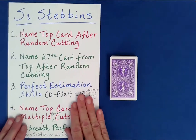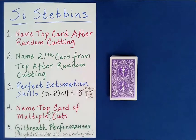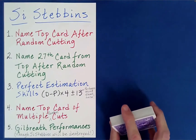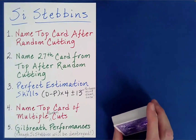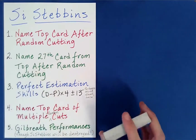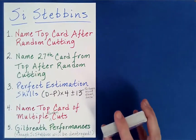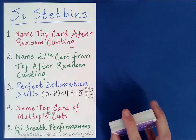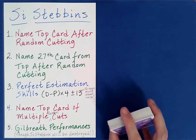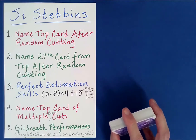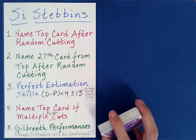Now the last one is a big one and I'll probably eventually put together a whole series on the Gilbreth principle because there's just so much to talk about here. If you're familiar with the Gilbreth principle you'll realize there's a lot that you can do with a Si Stebbins arrangement. But a consequence of a Gilbreth performance is the Si Stebbins ordering will be destroyed. That's not all bad if you were able to come up with a very surprising and engaging routine for the spectator, so it may be worth destroying your Si Stebbins arrangement for that purpose.